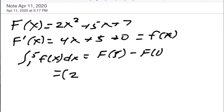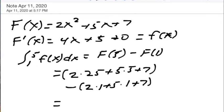and I'm going to put parentheses here, 2 times 25 plus 5 times 5 plus 7 minus 2 times 1 plus 5 times 1 plus 7 which is equal to 75 plus 7 which is 82 minus 14 which is 68.